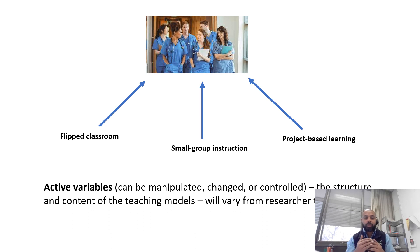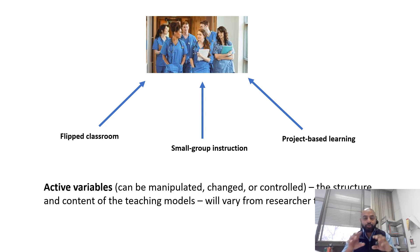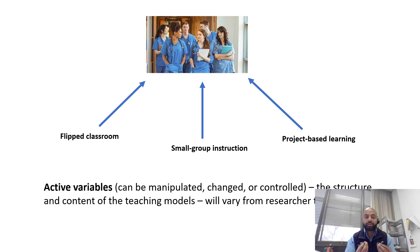The structure and content of the teaching models is an example of an active variable, and this will vary from researcher to researcher. How I conduct small group instruction may differ from how you do it, and this will impact student achievement and scores. How you allot groups — whether randomly, carefully planned, or with pre-selection criteria — also has an impact. Anything that you can manipulate, change, or control as a researcher is called an active variable.